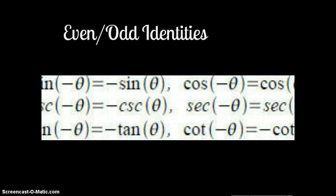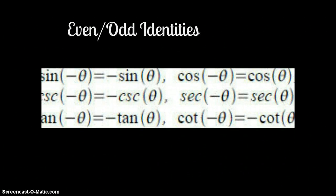Okay, here are your even and odd identities. The thing to remember about these is that a negative sign on your angle will make the whole term negative, except in the case of cosine and secant. Those are always going to stay positive. So if you just remember those two, you'll be fine on your even and odd identities.